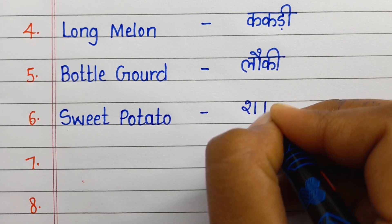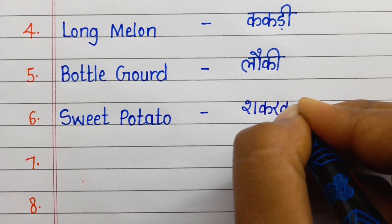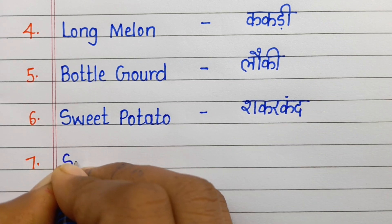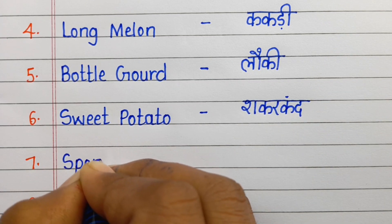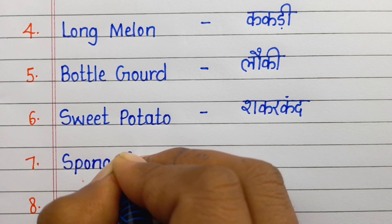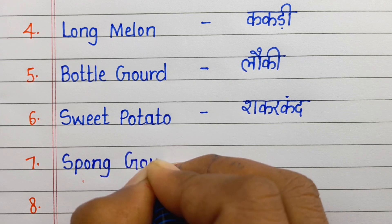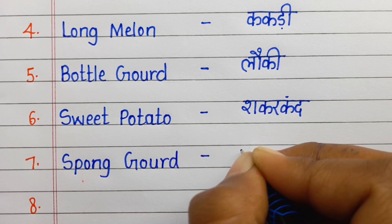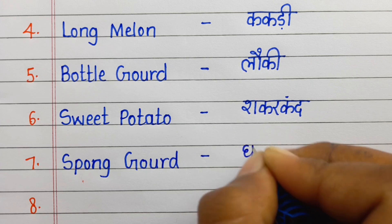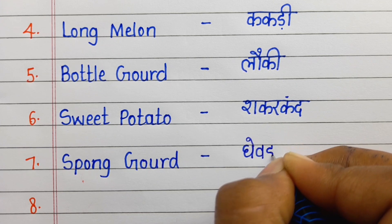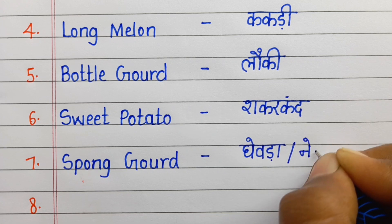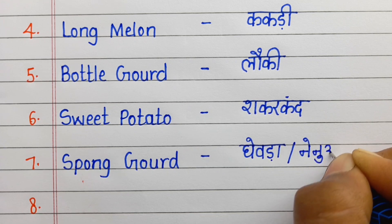Number six: Sweet potato. Sweet potato means sakarkand. Number seven: Spong guard. Spong guard means ghevra ya nenua.